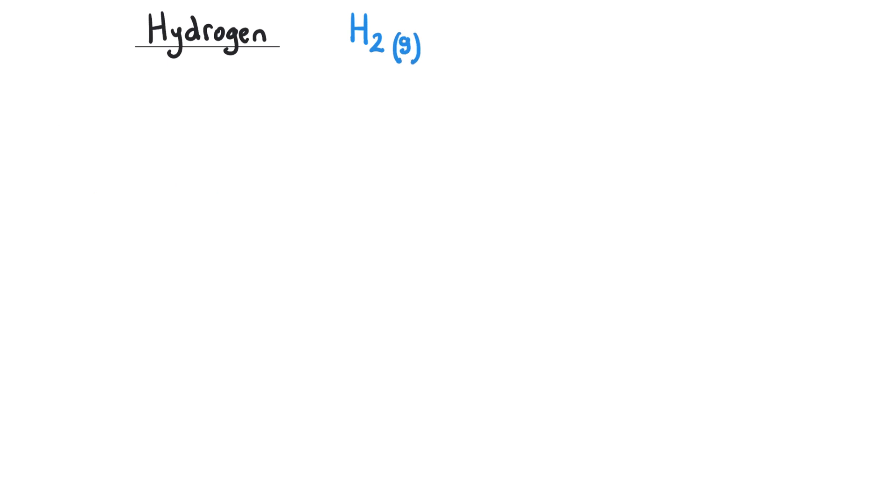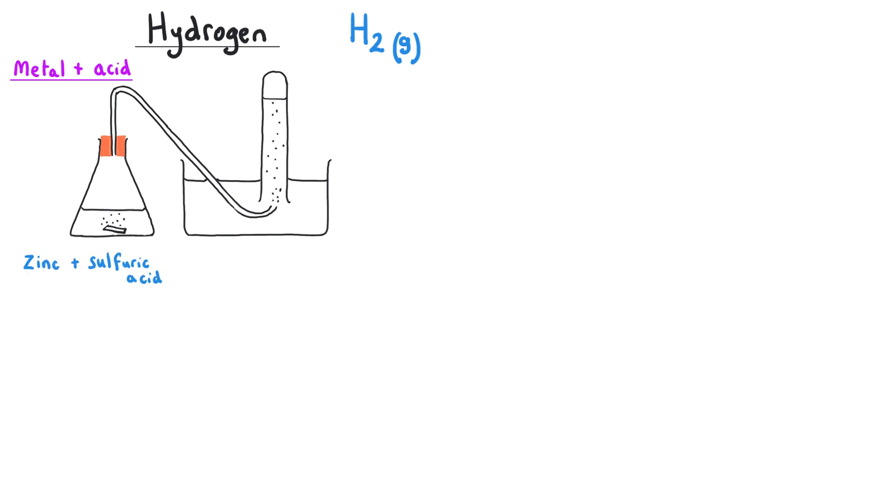There are a number of different topics where you might encounter hydrogen gas. First of all, it is produced when a metal reacts with an acid. For instance, if we put zinc into sulfuric acid, we would make zinc sulfate salt which would be dissolved in the solution, but we would also produce hydrogen gas. We could collect that in an upside down test tube or put our thumb over the top of that flask, wait for the gas to build up, and test for it with the lit splint to get our squeaky pop.